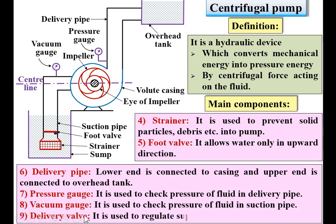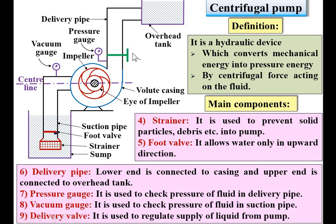Next: delivery valve. It is used to regulate the supply of liquid from the pump to the overhead tank, and it is located near the pressure gauge. This is the delivery valve.